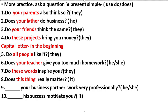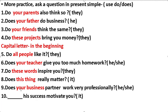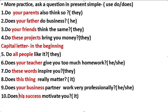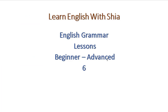Number nine: maybe your business partner — he or she. We use 'does'. Does your business partner work very professionally? Number ten: his success motivate you. His success — it. We use 'does'. Does his success motivate you? That's all about it. Listen again.